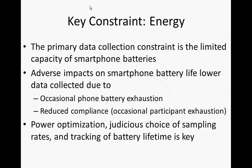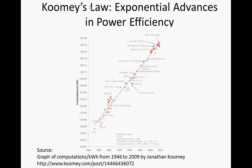A key constraint for all of this sort of information is the need to conserve energy, and indeed this is the primary data collection constraint with which we deal. Adverse impacts on smartphone battery life can lower the amount of collected data due to three things: phone battery exhaustion, which precludes collecting information at certain times during the day; reduced compliance and morale on the part of participants and reduced inclination to carry the phones; and more or less permanent battery capacity reduction. So power optimization and judicious choice of sampling rates and tracking battery lifetime is really key.